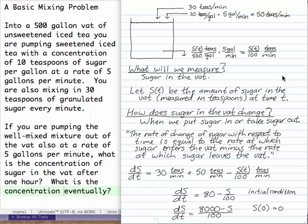So what are the rates that sugar is entering the vat? You have 30 teaspoons per minute of granulated sugar entering the vat. And the solution of 10 teaspoons per gallon concentration at a rate of 5 gallons per minute. That makes 50 teaspoons per minute of sugar entering the vat through the solution.